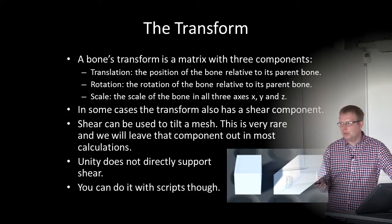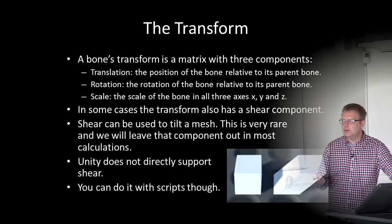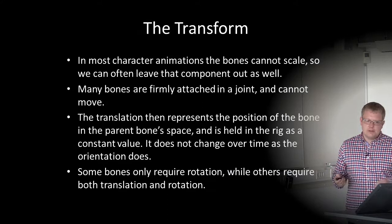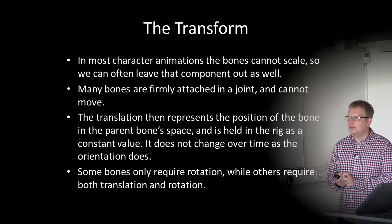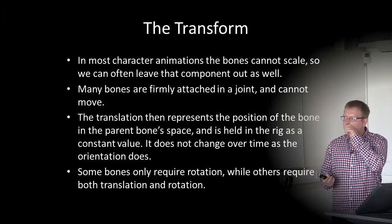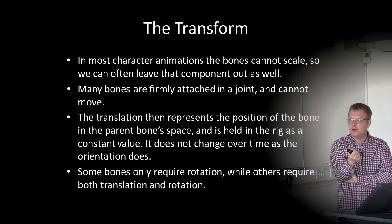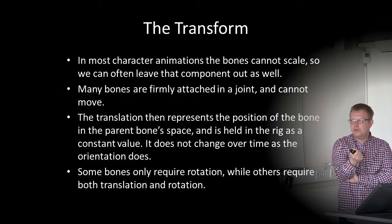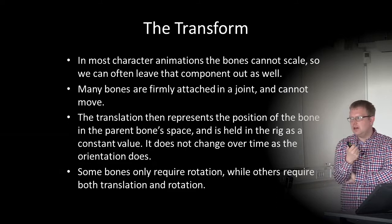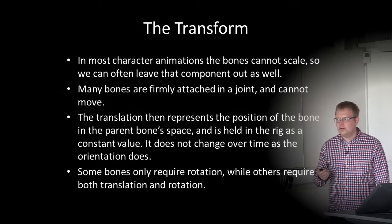There are also joints — for example the elbow — where the bones are firmly attached and cannot move. The position is always the same, so we only need a constant value for position and rotation is the only thing that changes over time. Some bones require only rotation; others require both translation and rotation.